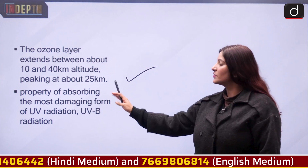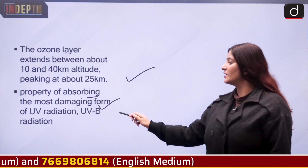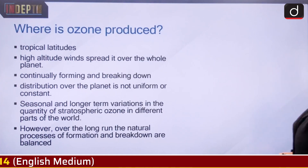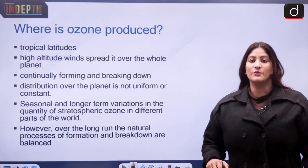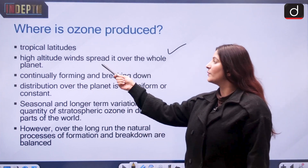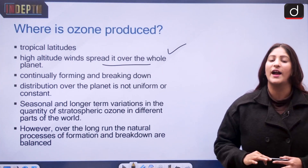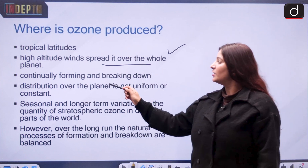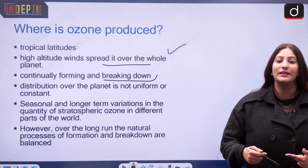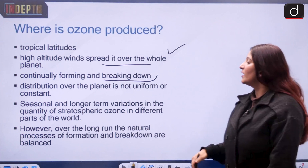The ozone layer has the property of absorbing the most damaging UV radiation, making the inhabitants of the Earth safe. Ozone is produced majorly in the tropical latitudes, and high-altitude winds spread it all over the planet. The ozone continually forms and breaks down — it is a continuous process due to the interaction of oxygen atoms.